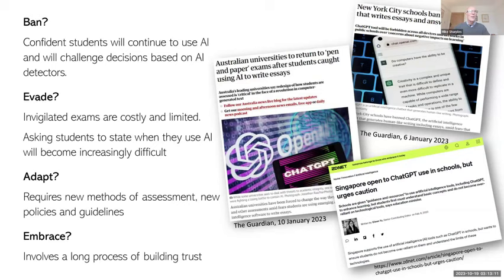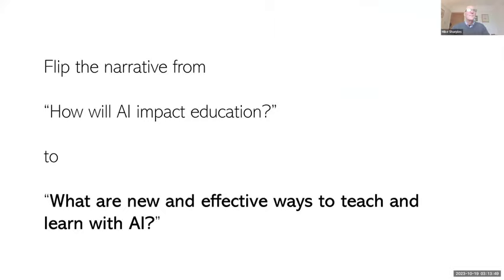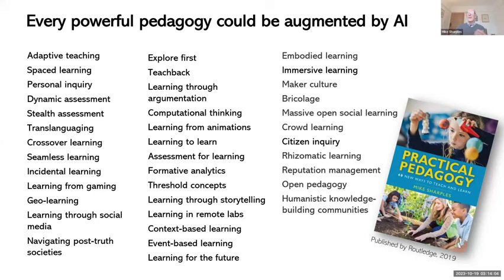This is the emerging policy and strategy I have picked up from talking with colleagues around the world. Firstly, amend written assessments to make them harder for AI to generate. Move towards more authentic assessments such as project work. Establish guidelines for students and staff in how to use generative AI. Reassure and support students in becoming AI literate and developing strategies for effective learning. Explain to students how they should acknowledge use of generative AI in assignments and manage suspected breaches of guidelines. Now I want to flip the narrative away from how will AI impact education, towards what are new and effective ways to teach and learn with AI.